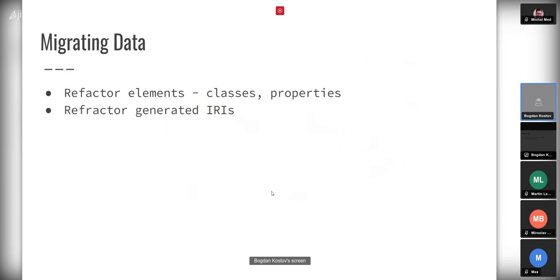After we are done with refactoring the code base, typically it is needed to perform migration of data. The migration obviously requires changing the classes and properties in the data, but there is also a problem that occurs due to generation strategies of IRIs for new instances when data is created. If we have some report entity being created, JOPA by default generates its IRI based on the type of the entity, so if we refactor the type, the IRIs would be refactored as well — meaning existing data instances need to change due to refactoring of the schema.